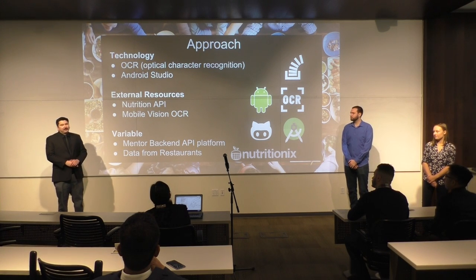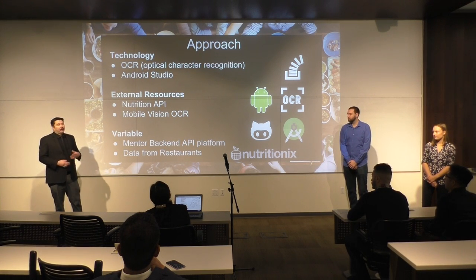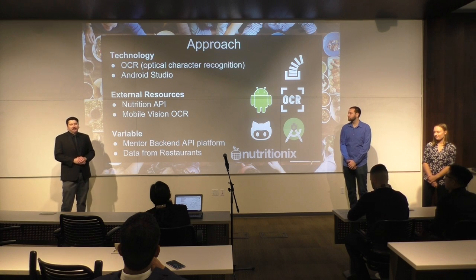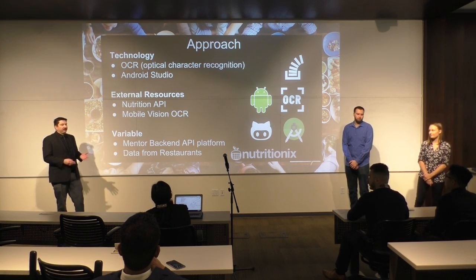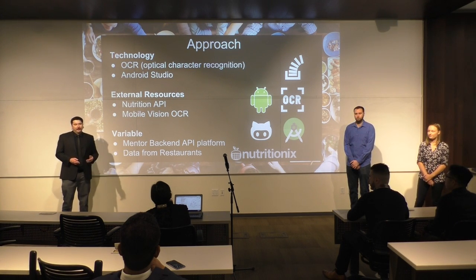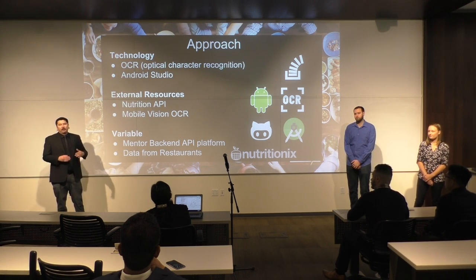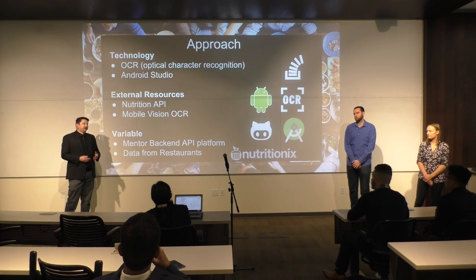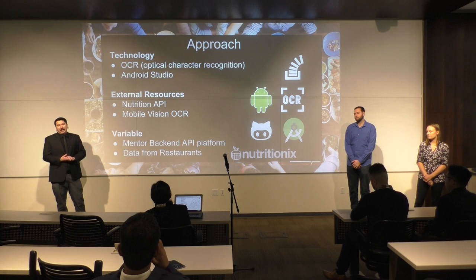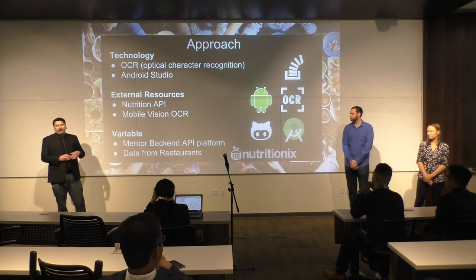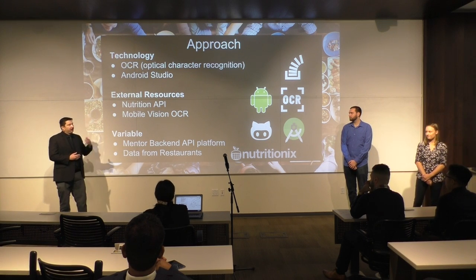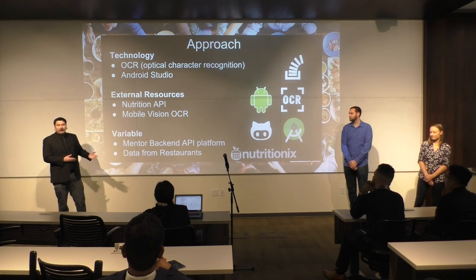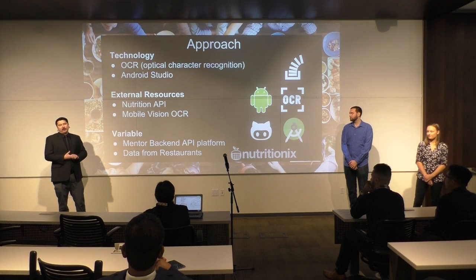Our approach to this application was first to familiarize ourselves with optical character recognition technology. After researching a few different technologies, we determined that the Mobile Vision OCR would be the best fit for our Android application. From there, we decided to break up our project into smaller milestones to keep track with our mentors, who were still collecting data and developing the back-end platform. This allowed us to create our own back-end server to continue with the project, and we utilized the NutritionX API to retrieve information on certain dishes.